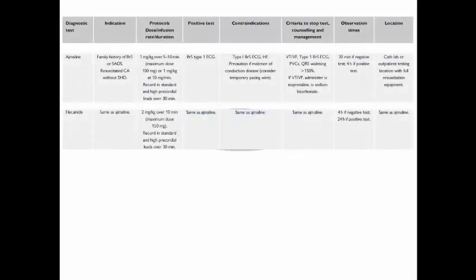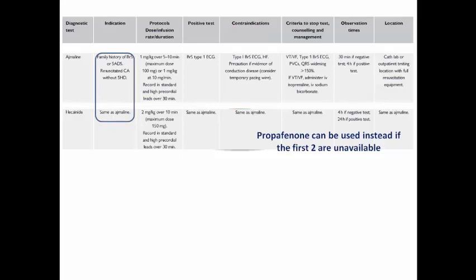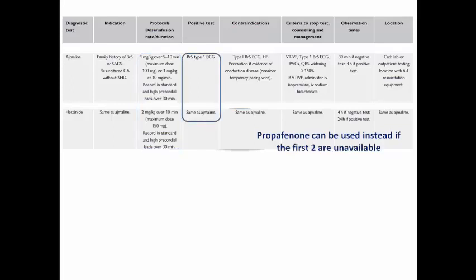The ajmaline and flecainide challenge tests are used in patients with suspected Brugada syndrome; if unavailable, propafenone can be used orally. Indications include family history of Brugada syndrome or sudden arrhythmic death syndrome, and resuscitated cardiac arrest survivors with no structural heart disease. The positive finding is appearance of frank type 1 Brugada pattern on ECG, with V1 and V2 placed in the second intercostal space to increase sensitivity. Type 1 Brugada syndrome is a contraindication as it is a straightforward diagnosis without need for provocative testing.